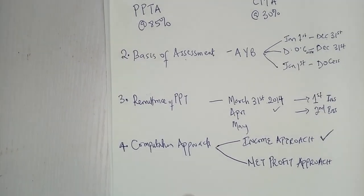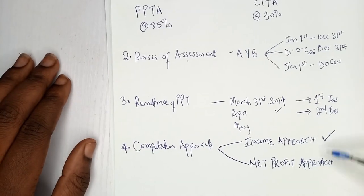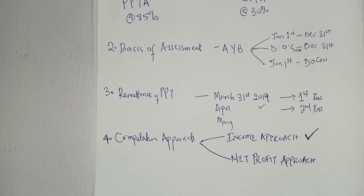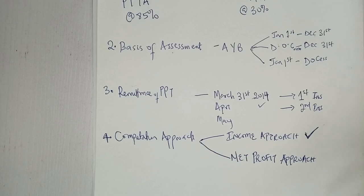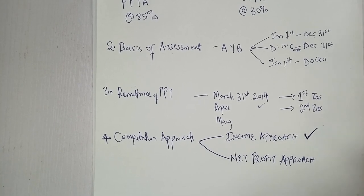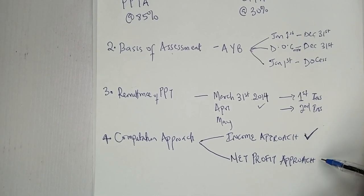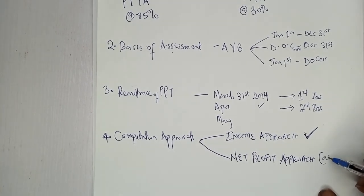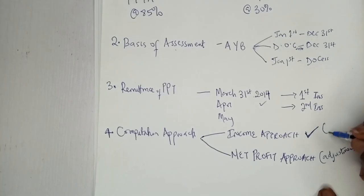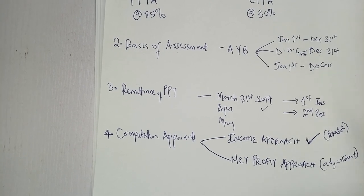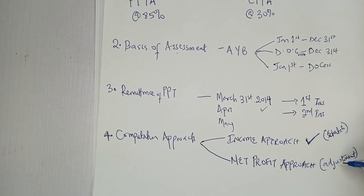Both approaches are common in exams. In the income approach, you calculate all income sources yourself — such as sale of natural gas and sale of crude oil — from scratch, then deduct expenses. In the net profit approach, the income and expenses have already been netted; you are given a net profit and must adjust by adding back disallowable expenses such as depreciation and general provisions. The net profit approach does not start from scratch.